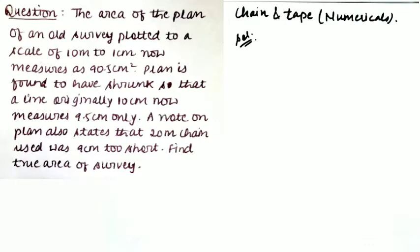The first question says that the area of the plan of an old survey, plotted to a scale of 10 meters to 1 centimeter, now measures 90.5 centimeter square as found by a planimeter. The plan is found to have shrunk so that a line originally 10 centimeters long now measures 9.5 centimeters only. A note on the plan states that the 20 meter chain used was 9 centimeters too short. Find the true area of the survey.